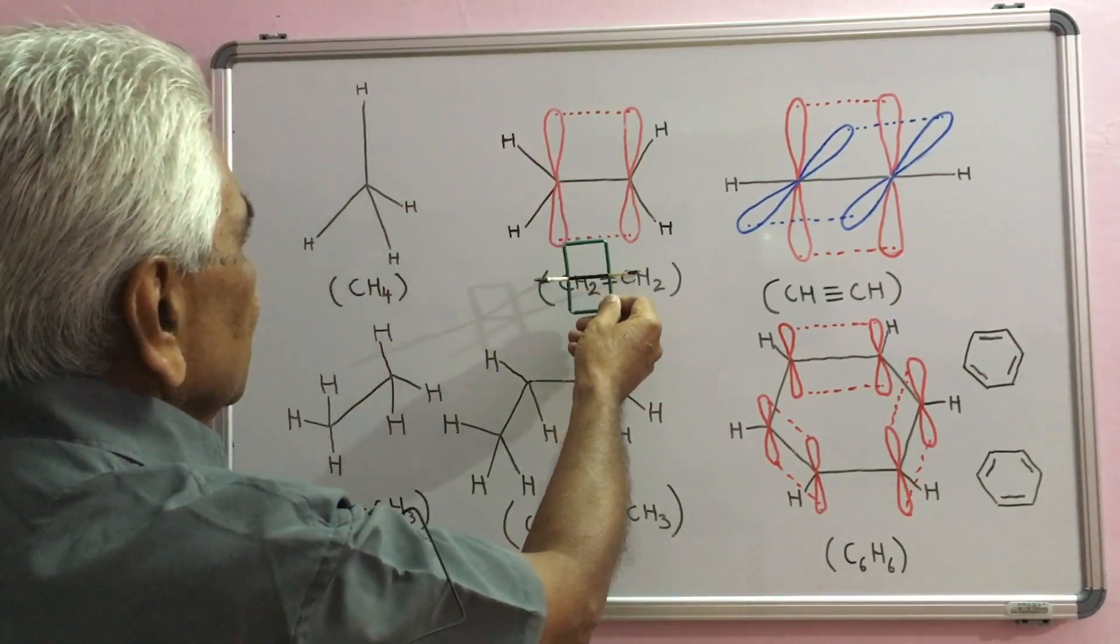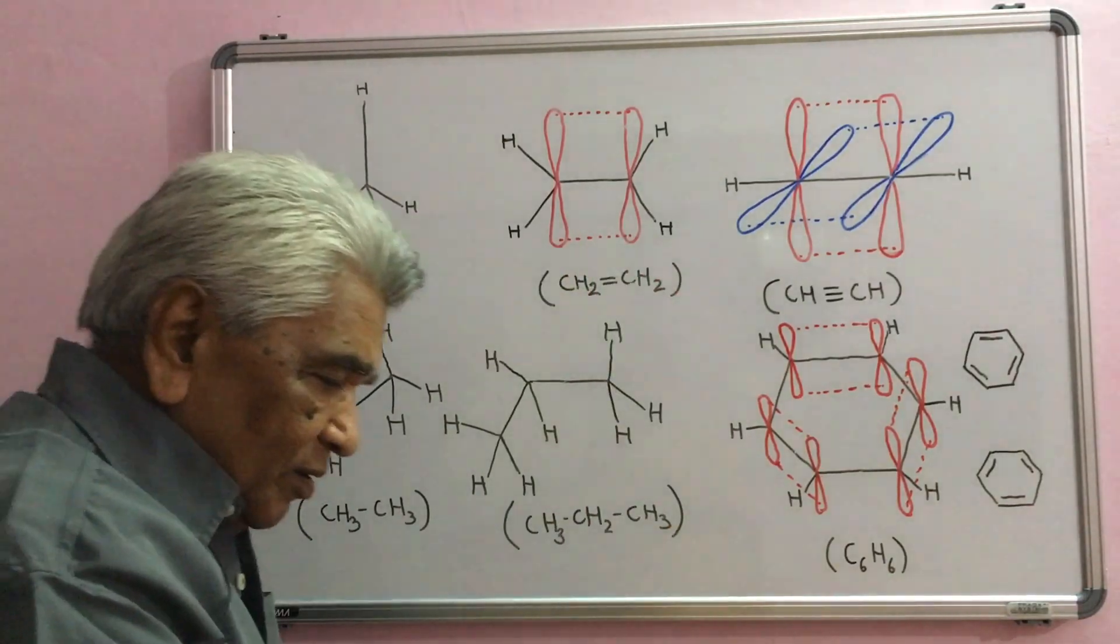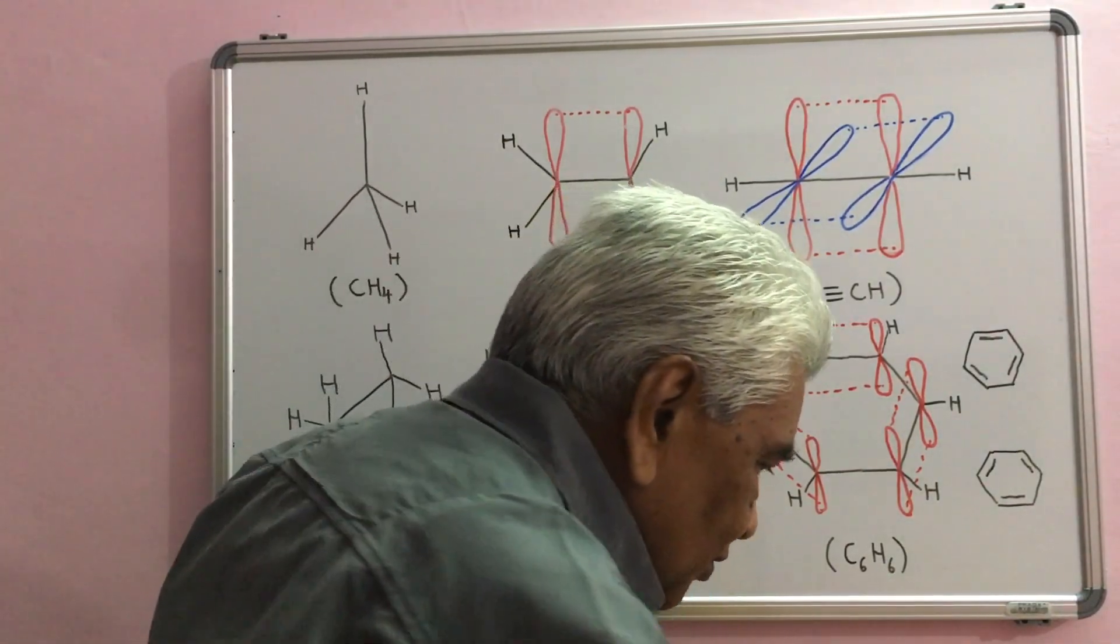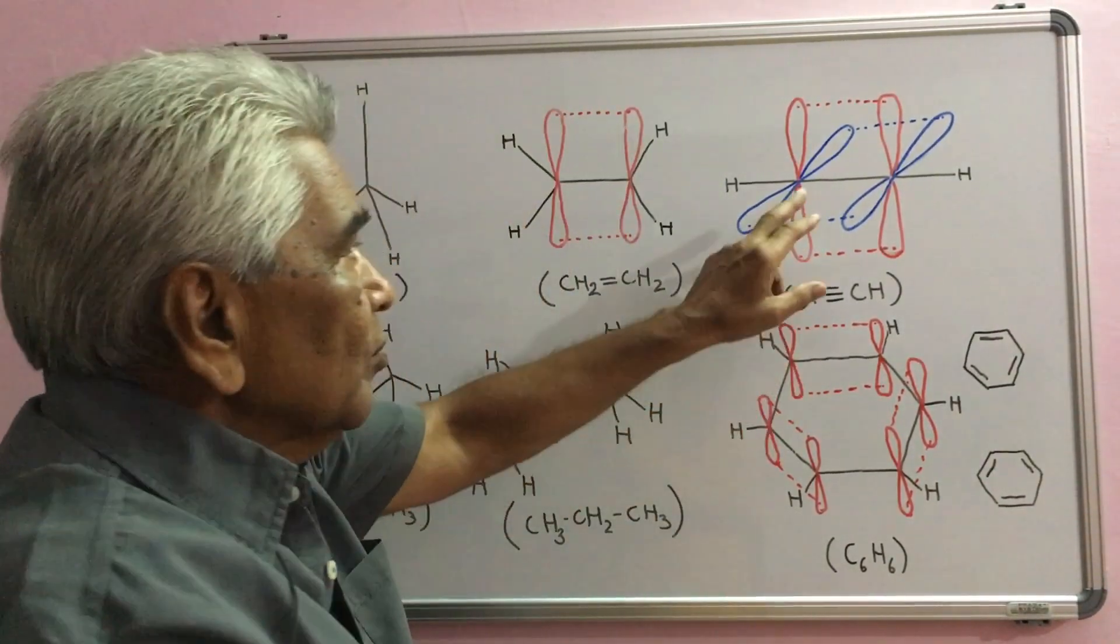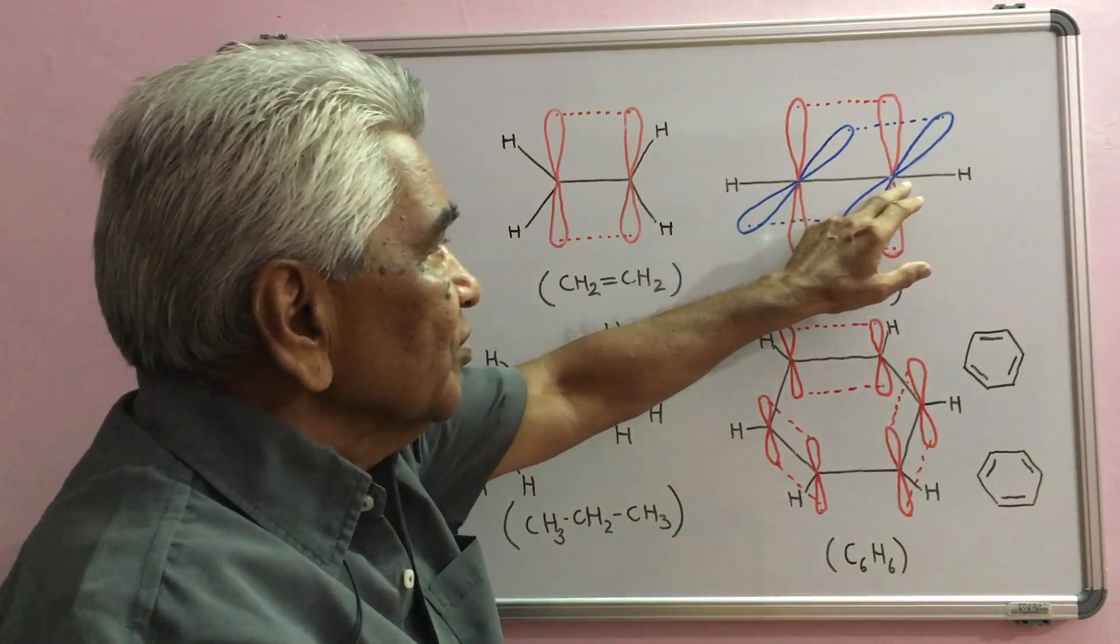This is ethylene. When we come to a triple bond, both are sp hybridized.